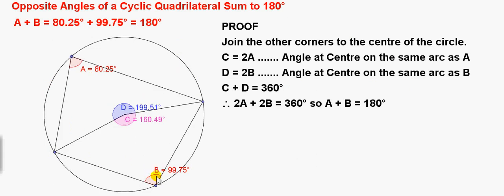To prove that A plus B equals 180 degrees, we join the other corners of the cyclic quadrilateral to the centre of the circle. Then we apply the previous theorem from the previous video. We see that both angles A and C stand on the same arc. They stand on this arc here. So the angle at the centre, which is C, must be twice the angle at the circle, which is A. C equals 2A.